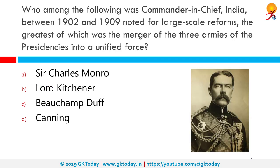Who among the following was Commander-in-Chief of India between 1902 and 1909 and is noted for four large-scale reforms, the greatest of which was the merger of the three armies of the presidencies into a unified force? The correct answer is Lord Kitchener. He is also known for reconstruction of the disorganized Indian army against the wishes of then Viceroy Lord Curzon.